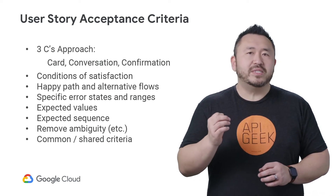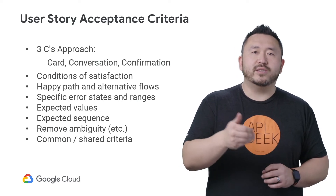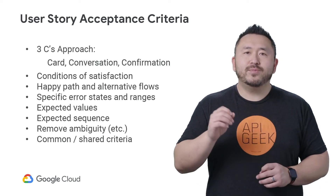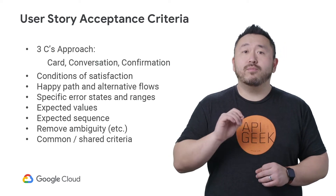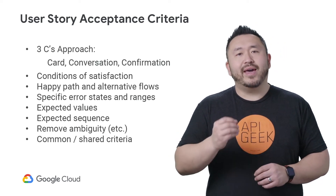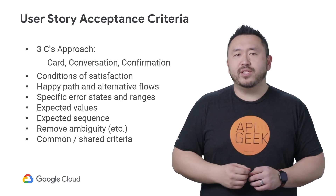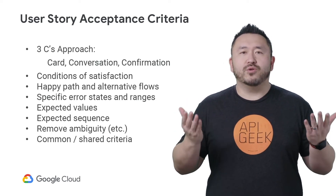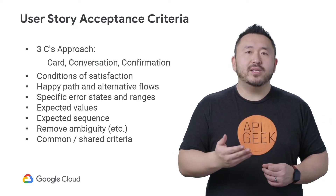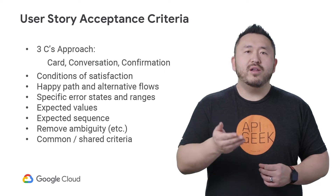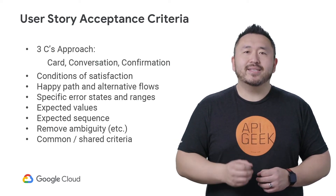Write the specific error codes in an API, as well as the specific conditions that trigger it. Put any specific values to be passed or returned. Specify if there are multiple conditional flows, as well as the sequence. You may find that there are times when the same acceptance criteria might apply to multiple user stories — for example, a shared flow or a policy that is reused, or non-functional criteria like performance metrics. In these cases, make separate acceptance criteria that can be linked to the user story.